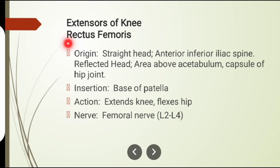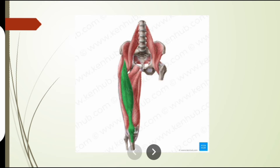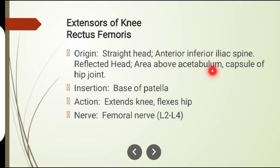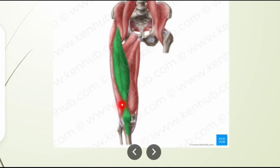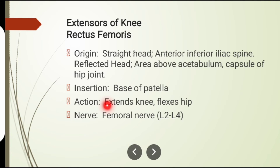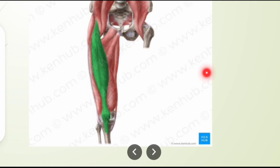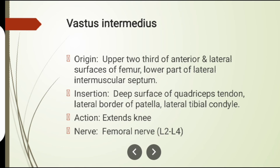The first muscle involved in knee extension is rectus femoris. It has two heads: the straight head and the reflected head. The straight head originates from the anterior inferior iliac spine, and the reflected head from the area above the acetabular capsule of the hip joint. The insertion of rectus femoris is on the base of the patella. Action: knee extension and hip flexion. Nerve supply: femoral nerve.